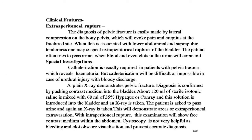Clinical features — extraperitoneal rupture: diagnosis of pelvic fracture is made by lateral compression on the bony pelvis, evoking pain and crepitus. When associated with lower abdominal and suprapubic tenderness, one may suspect extraperitoneal rupture of the bladder. The patient often tries to pass urine, and blood and clots may come out. Catheterization is usually required in patients with pelvic trauma, revealing hematuria, though catheterization may be difficult or impossible in case of urethral injury. A plain X-ray demonstrates the pelvic fracture.